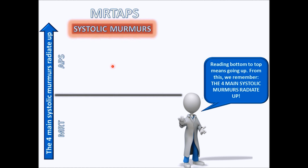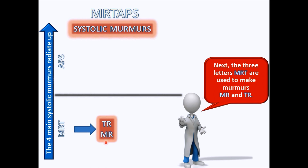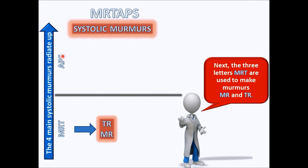Since we read from bottom to top, all systolic murmurs radiate upwards. From the bottom letters we can make MR and TR, and from the top we get AS and PS. So our four systolic murmurs are AS, PS, TR, and MR, and we know they all radiate upwards. Here are the abbreviations and what they stand for.